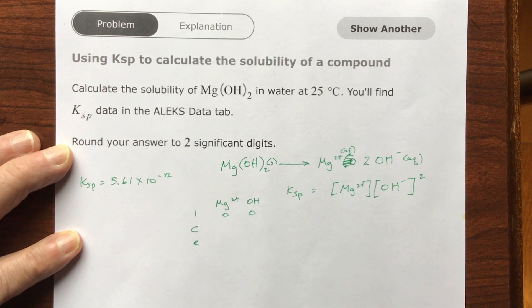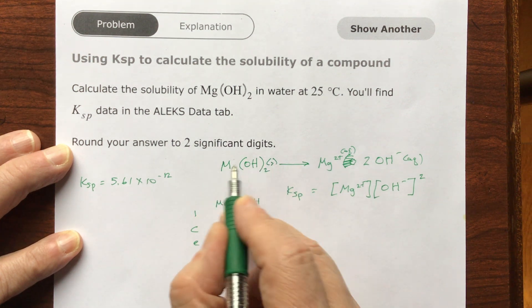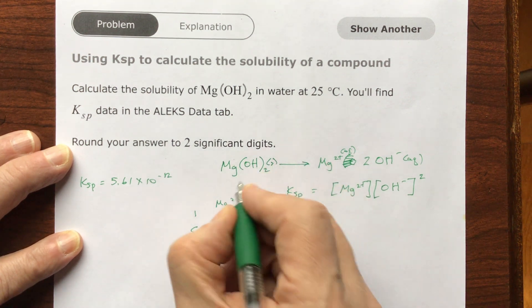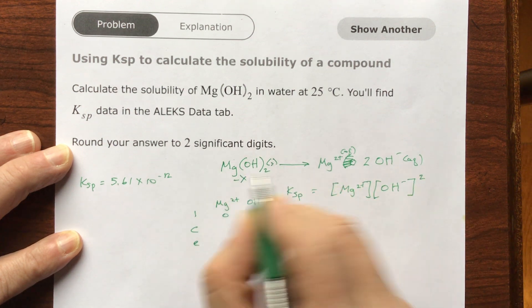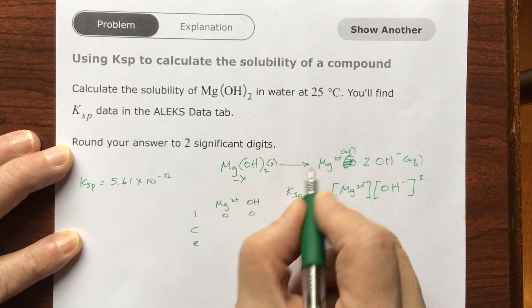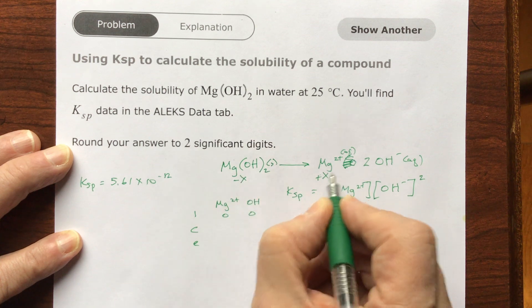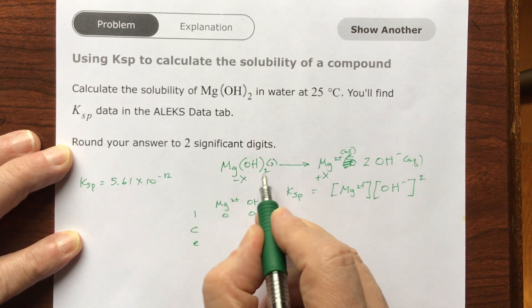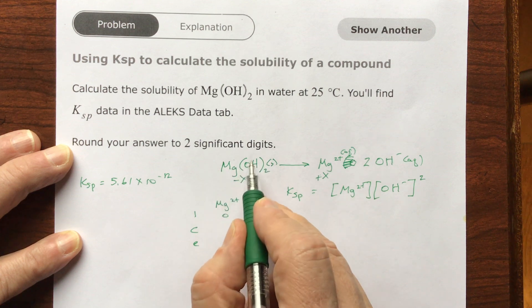Now what's going to happen as it dissolves? For every one of these molecules, for every molar amount of this, it's going to go away, and one of these is going to form. See, this breaks off, and there's one in this molecule, so this is going to be positive X. For every one that breaks apart, I'm going to get one of these.